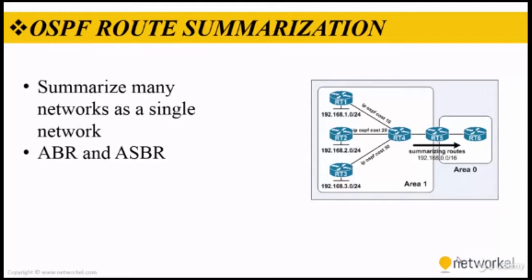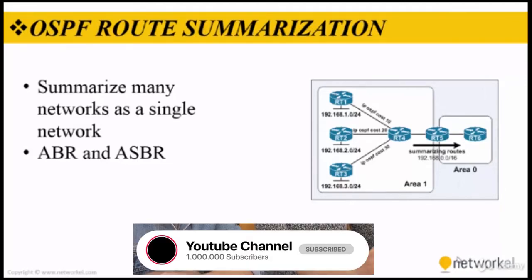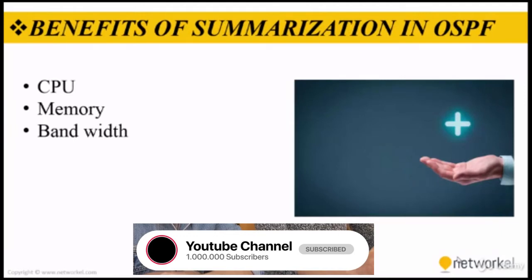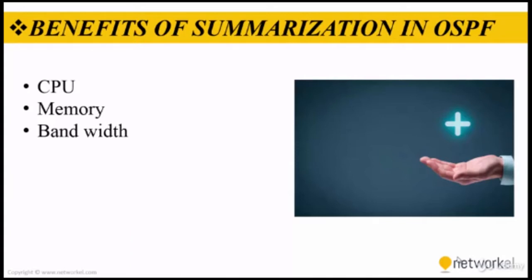When a route is lost in one area, routers in other areas are also required to perform the shortest path calculation. Route summarization can be done on the ABR or the ASBR to reduce the area database size. ABRs or ASBRs combine multiple route entries into a single route, which directly affects bandwidth, CPU power, and memory resources consumed by OSPF. Only summarized routes are propagated into the backbone area (area 0), and the stability of the network is enhanced.